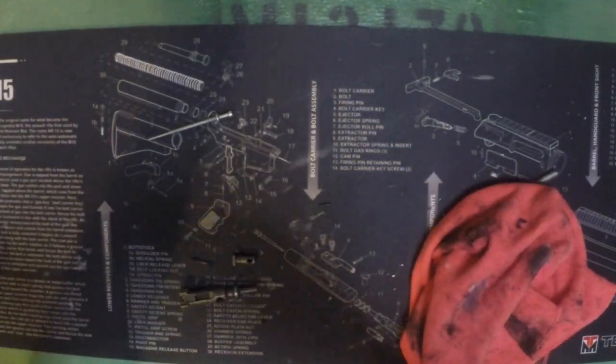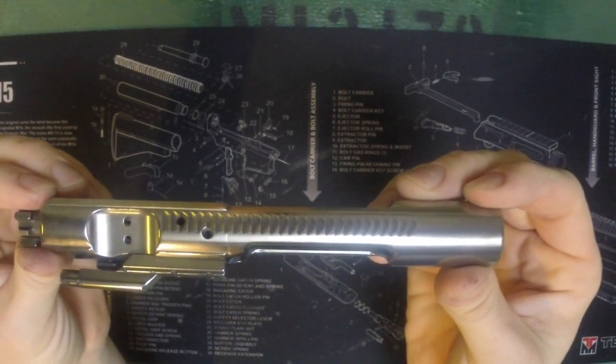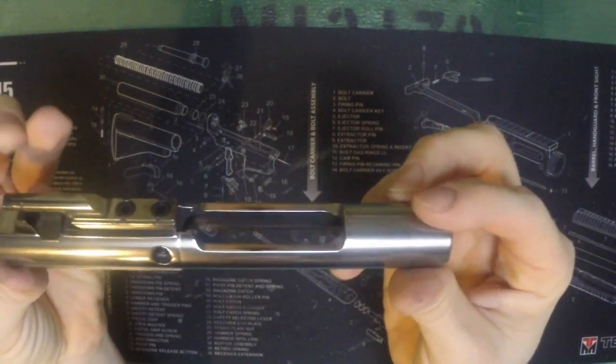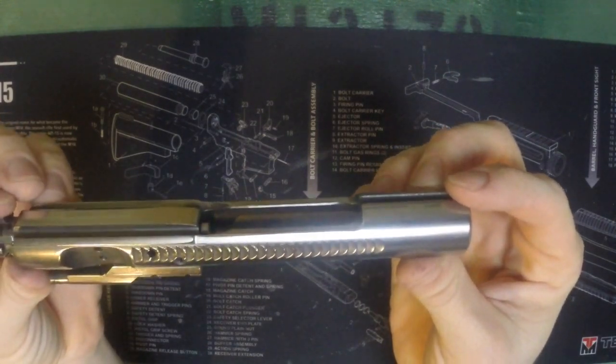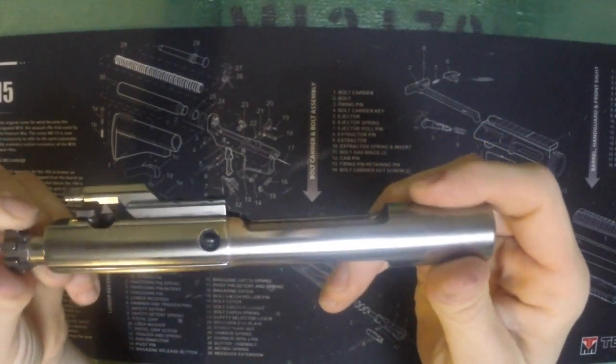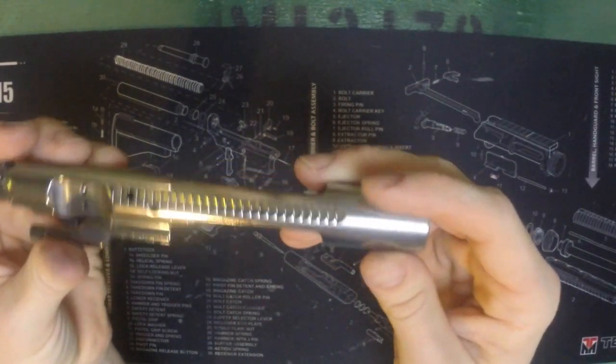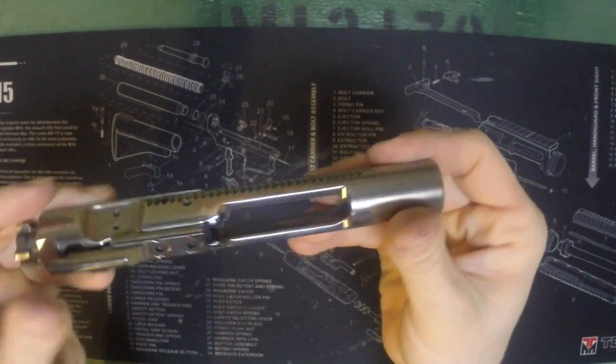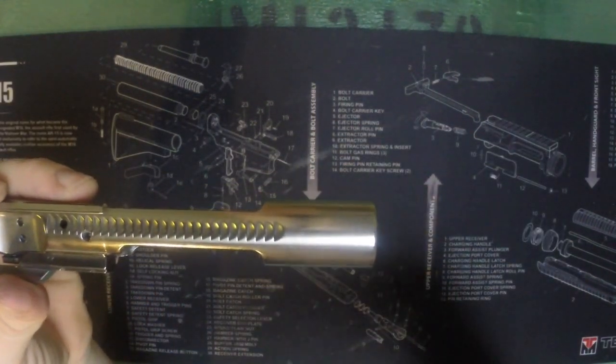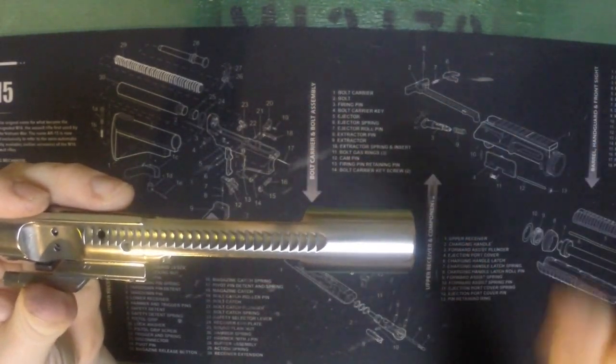So here's the final polish and deep clean nickel boron bolt carrier group. As you can see, I mean, it's night and day difference—not sure how well you'll be able to tell in the video, but you can definitely tell. This looks brand new. I'm extremely happy with that.